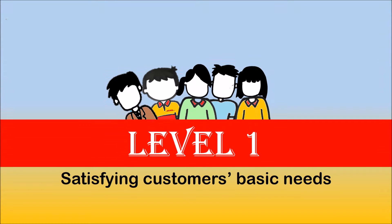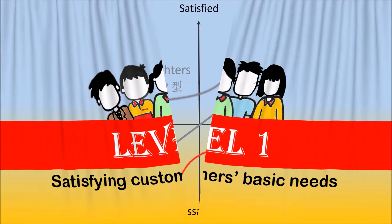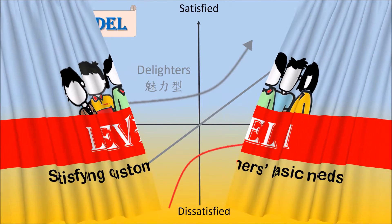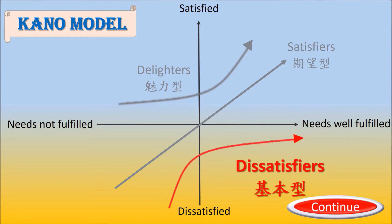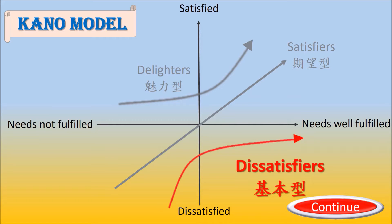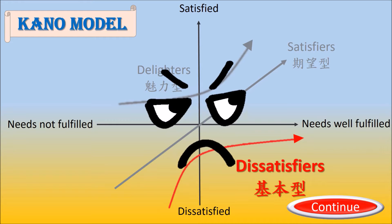Level 1: Satisfying customers' basic needs. The first step to improve customer satisfaction is to satisfy customers' basic needs — for example, being on time. Customers take them for granted, but their absence does make customers unhappy.